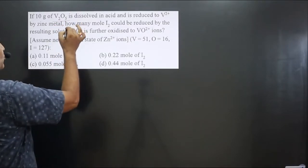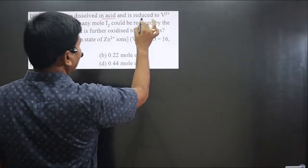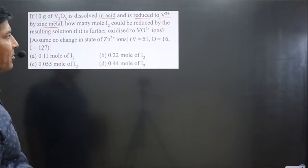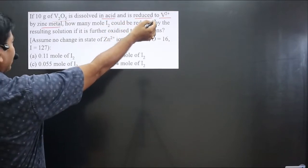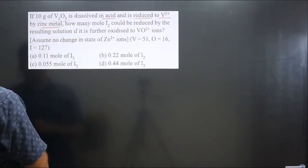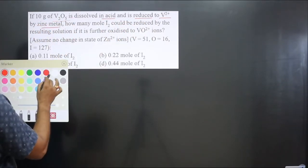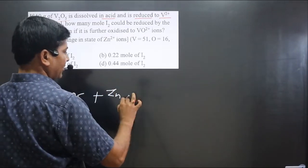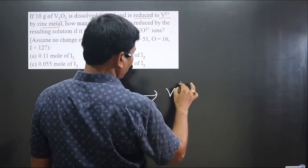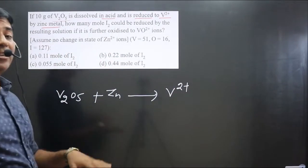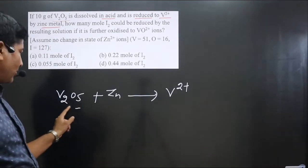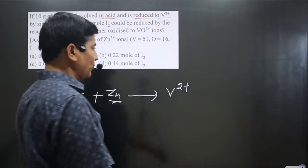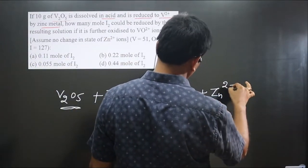The question says if 10g of V2O5 is dissolved in acid and is reduced to V²⁺ by zinc metal. We get one chemical reaction: V2O5 reacting with zinc metal in acidic medium, converting into V²⁺. Zinc undergoes oxidation reaction, converting to its common oxidation number Zn²⁺. The reaction is taking place in acidic medium.